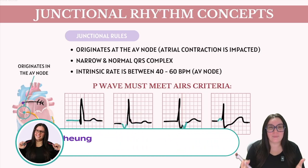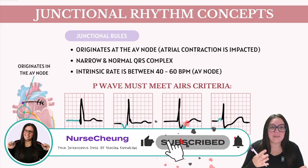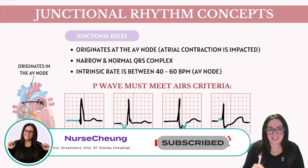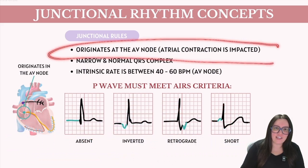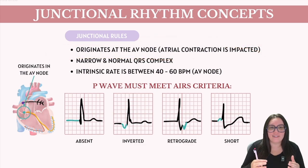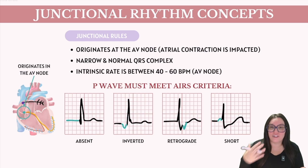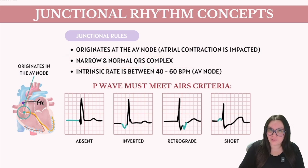We always begin by talking about our junctional rules. It's important to note that the impulse that initiates the heartbeat is going to start in the AV node itself, and it only travels downwards towards our ventricles. Because the rhythm is originating at or above the junction, we're still going to see a normal and narrow QRS complex.